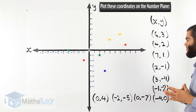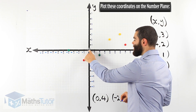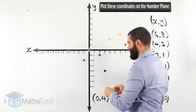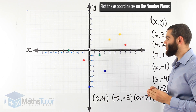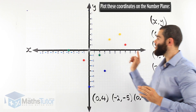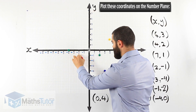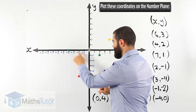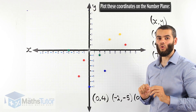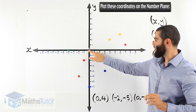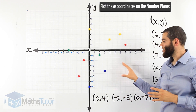For (0, -7): 0 on the x-axis, then go down 7 on the y-axis. For (-2, -5): negative 2 on the x and negative 5 on the y — they meet down there. For (0, 4): 0 on the x-axis and go up 4 on the y-axis.